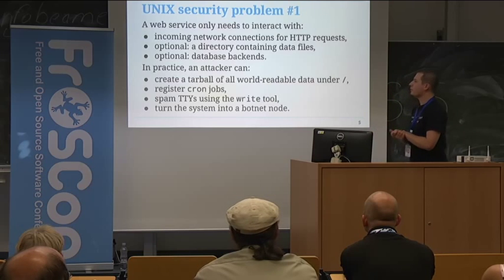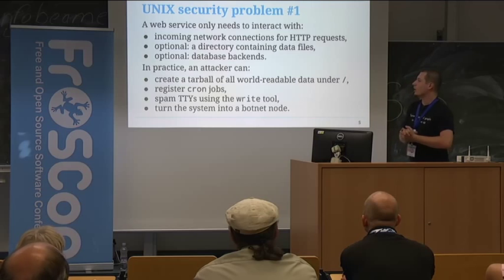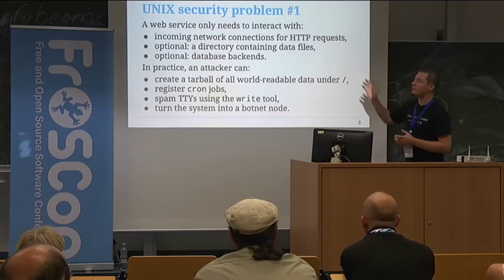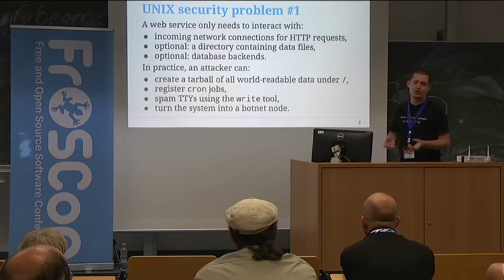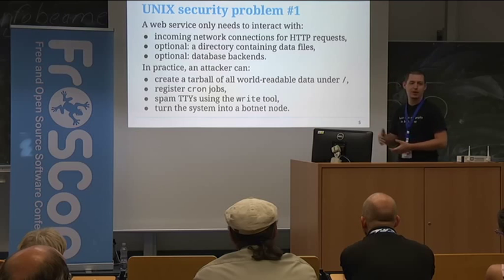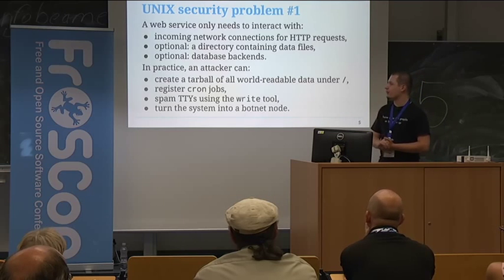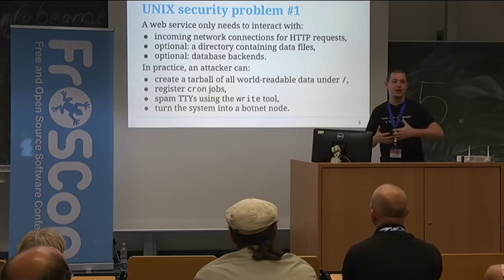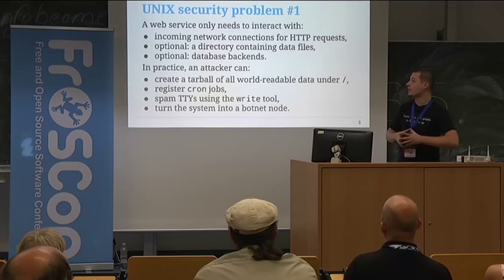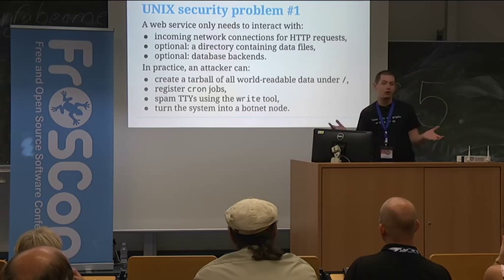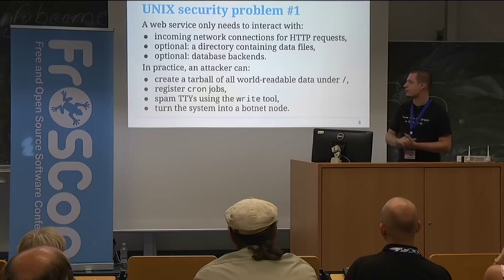Unix security problem number one. In my opinion there are two problems with Unix security. When we start a process on Unix, it can do a lot more than it actually needs to do. Consider a simple web service — a simple Apache or Nginx server that just serves a couple of web pages. In theory this process would only need to do a handful of things: pick up HTTP requests that come in on a TCP socket, access some kind of data directory containing your documents, and optionally access a couple of database backends and a log file. It's just a really small number of things this web server needs access to.